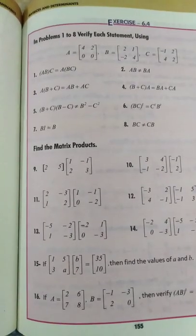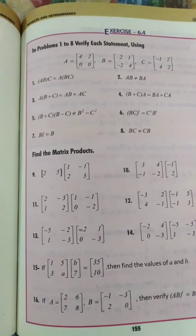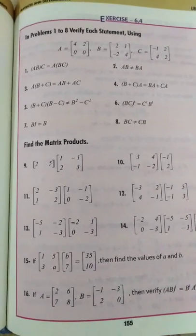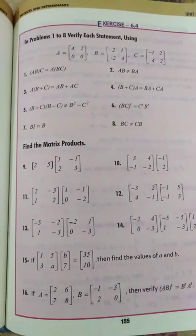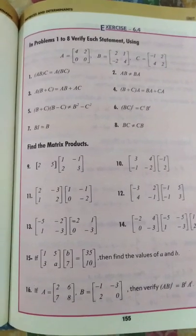So class 10, open your books, page number 155, unit number 6, matrices and determinants. Look at exercise 6.4, question number 15. If [1 5; 3 a] and [b 7] is equal to [35; 10], then find the values of a and b.